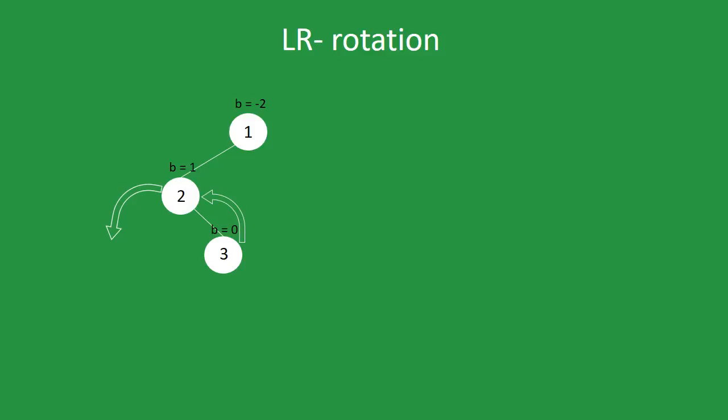And the last rotation takes place when the top node has balance of minus 2, but the node under has balance of 1. This rotation is called left-right. So first we rotate 2 and 3 to the left, get this, and apply right rotation.